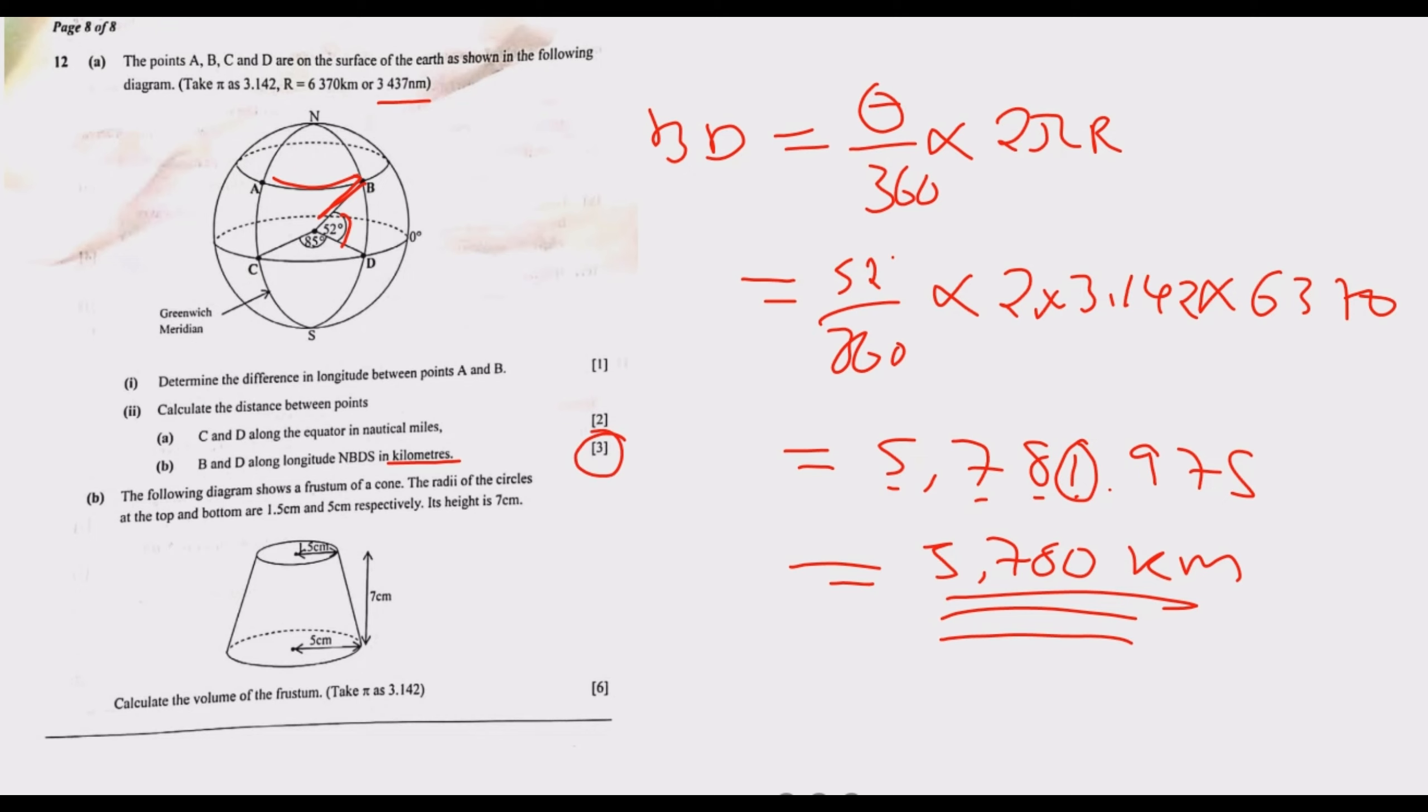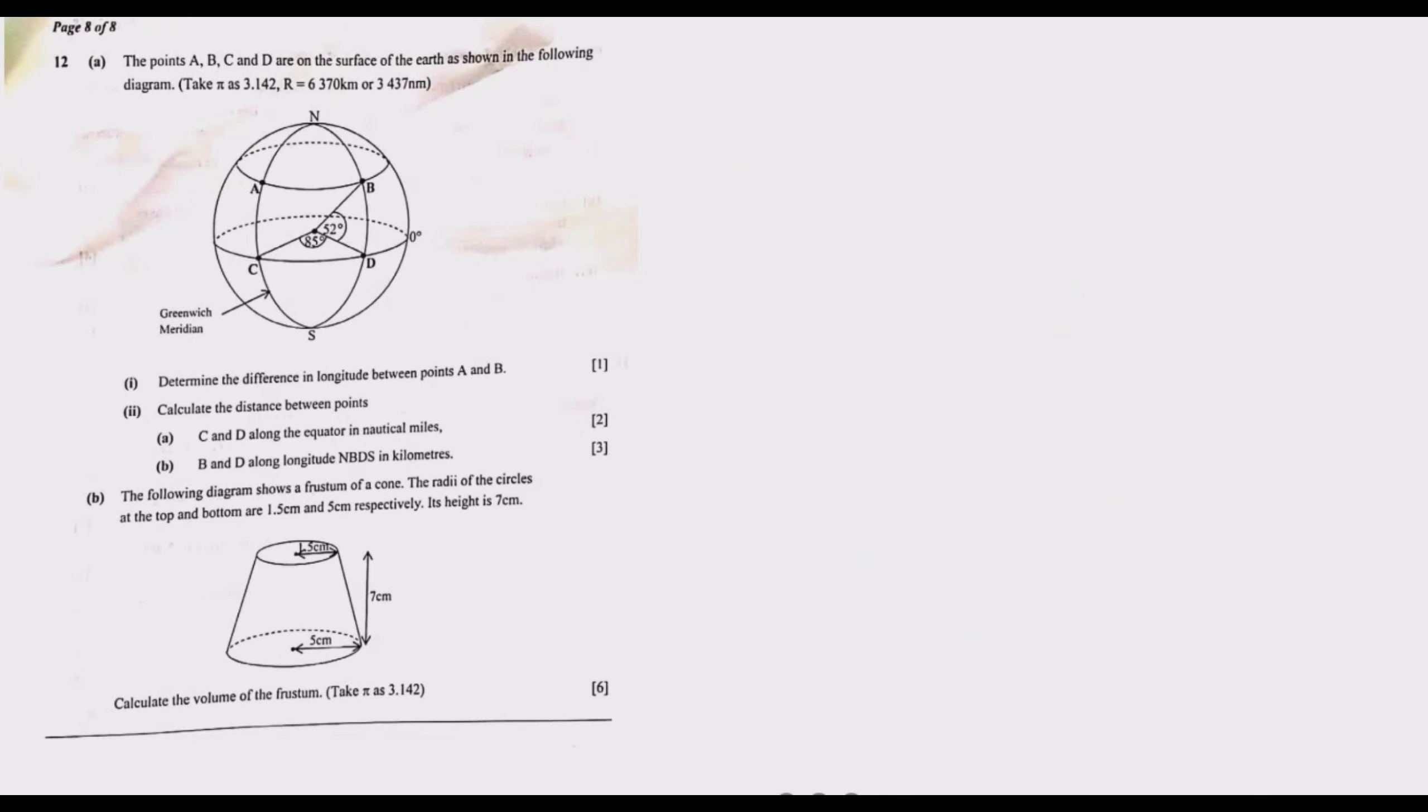Let us move to part B. Part B reads: the following diagram shows a frustum of a cone. The radii of the circle at the top and the bottom are 1.5 cm and 5 cm respectively. The height is 7 cm. Calculate the volume of the frustum.